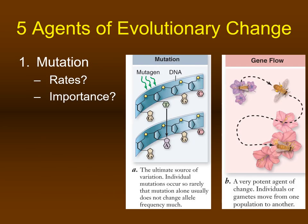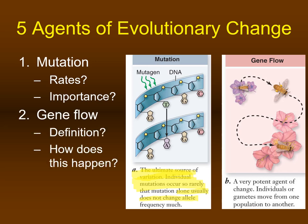Mutation rates in populations of higher eukaryotes such as animals and plants are fairly infrequent. Although mutations are indeed the ultimate source of variation, individual mutations occur very rarely, so mutations alone usually do not change allele frequency very much. Gene flow is the movement of genetic information into or out of a population, and it is an extremely potent agent that promotes genetic changes in the population.